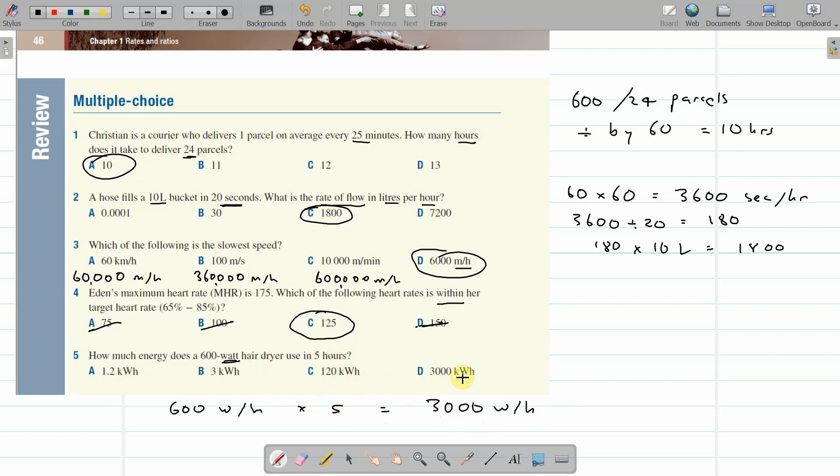But then all of these are in kilowatt hours. So we're going to find there's 1,000 watts in 1 kilowatt. So divided by 1,000 will give you how many kilowatt hours. And that divided by 1,000 is 3. 3 kilowatt hours. 3 is our answer. Thank you.